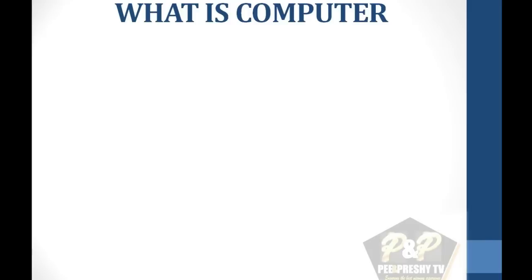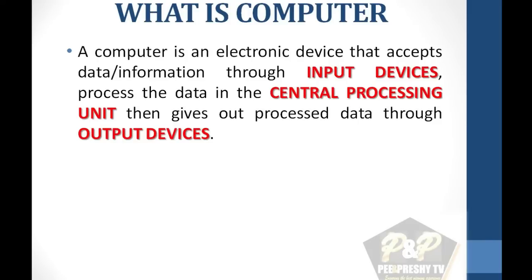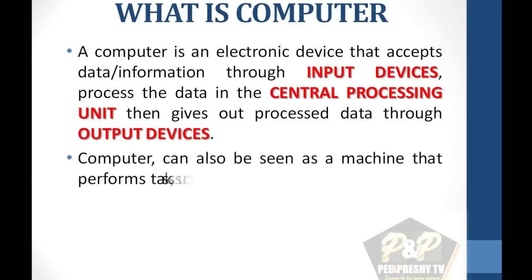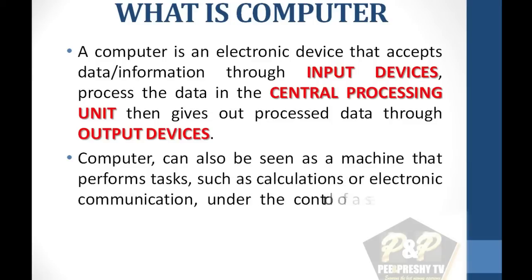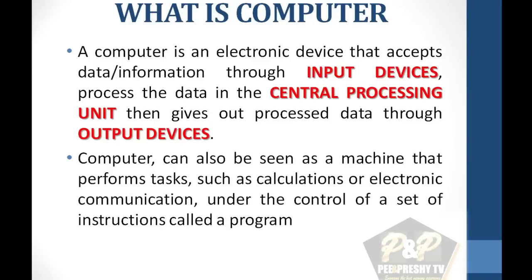What is the computer? A computer is an electronic device that accepts data and information through input devices, processes the information in the central processing unit, and gives out processed information through output devices. Please take note of the words highlighted in red color because as we proceed we will be repeating these words in different ways. The computer can also be seen as a machine that performs tasks such as calculations and electronic communication under the control of a set of instructions called a program.